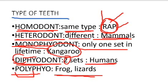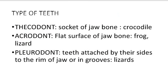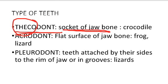Another type is thecodont teeth, which are embedded in the socket of jaw bones. The examples are crocodiles and humans, or more broadly, mammals and crocodiles. In thecodont dentition, the teeth are firmly embedded within sockets of the jaw bone.